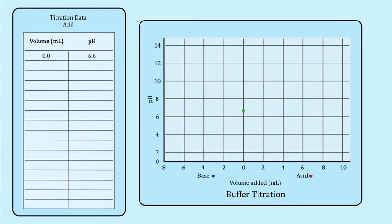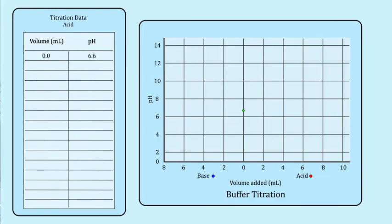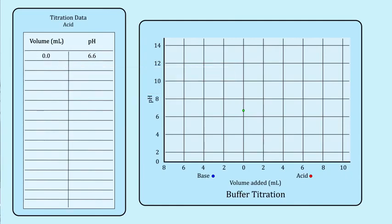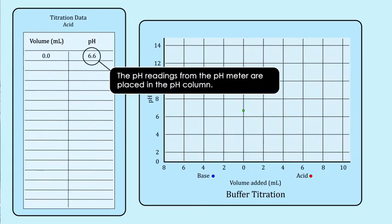In this particular experiment, we're starting with the acid. So the data that we are going to record is what volume of acid did we add to the buffer and what was the pH of the buffer after we added that much acid. Then we are going to create a graph known as a titration curve that shows the relationship between the amount of acid or base that we added and the pH of the buffer solution.